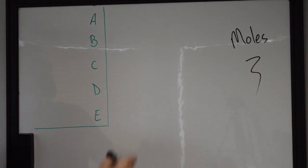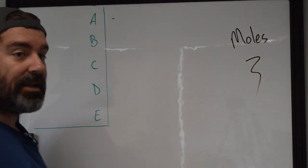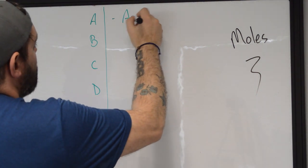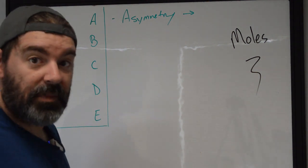The A, B, C, D, E's of moles and identifying to see if there's going to be a problem with them. The first one is A stands for asymmetry. And what does asymmetry mean? It means not symmetrical.